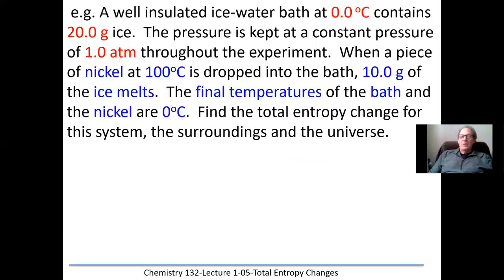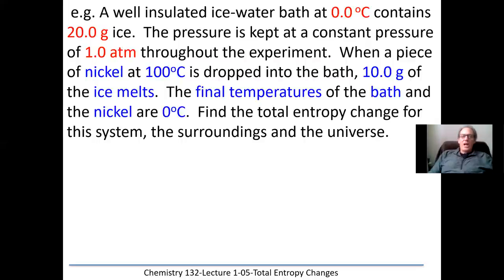Let's look at a problem. We have a well-insulated ice water bath at zero degrees Celsius — it's at zero degrees because there's ice in the container. There are 20 grams of ice, and the pressure is kept constant at one atmosphere throughout. If I take a piece of nickel at 100 degrees Celsius — which came from a boiling water bath — and drop it into the bath, some of that ice is going to melt. The heat lost by the nickel is used to melt the ice.